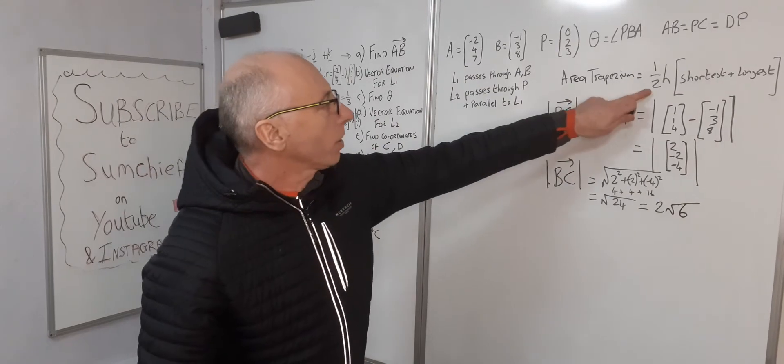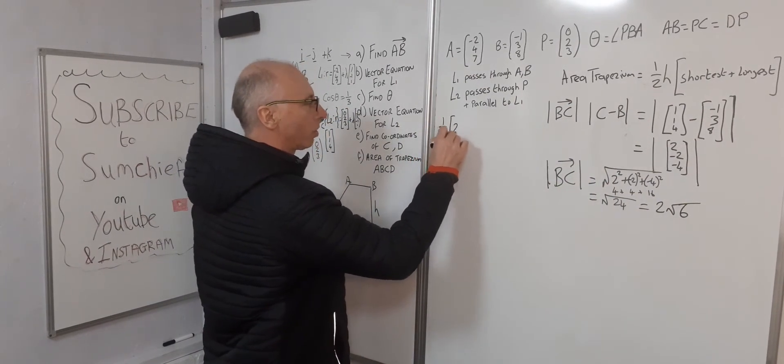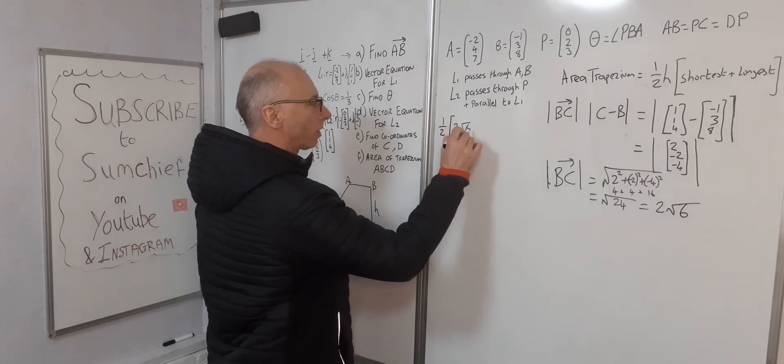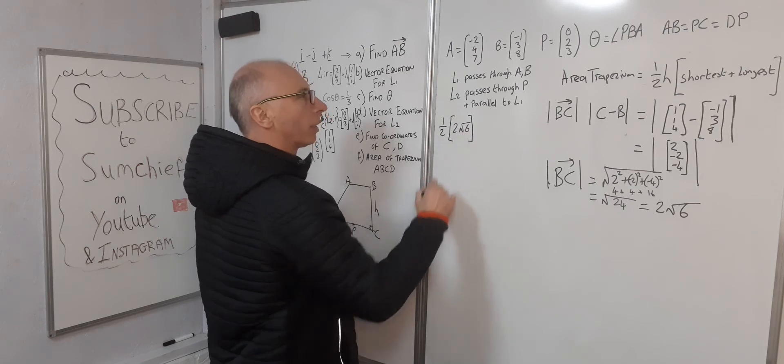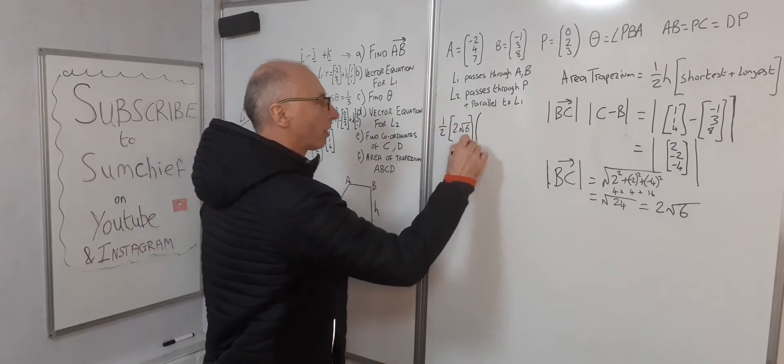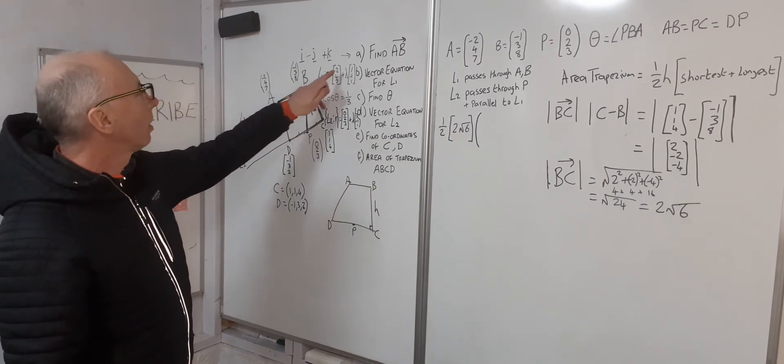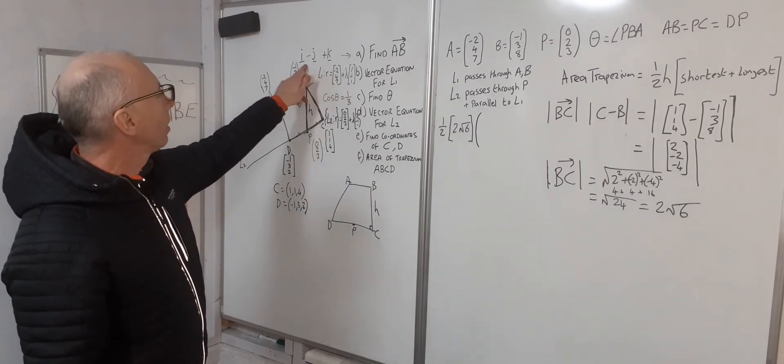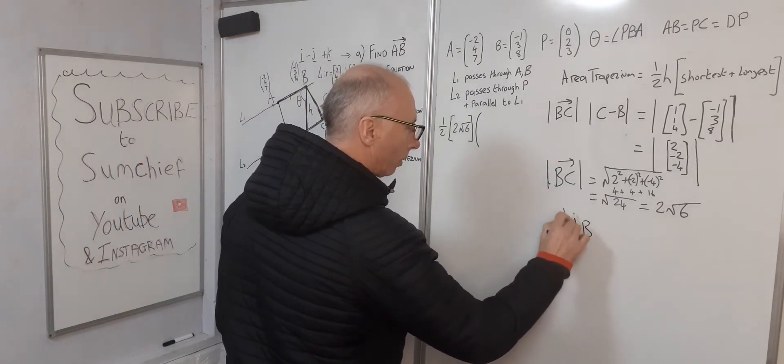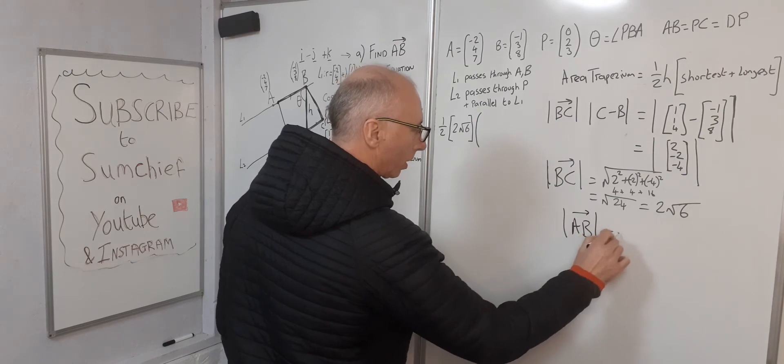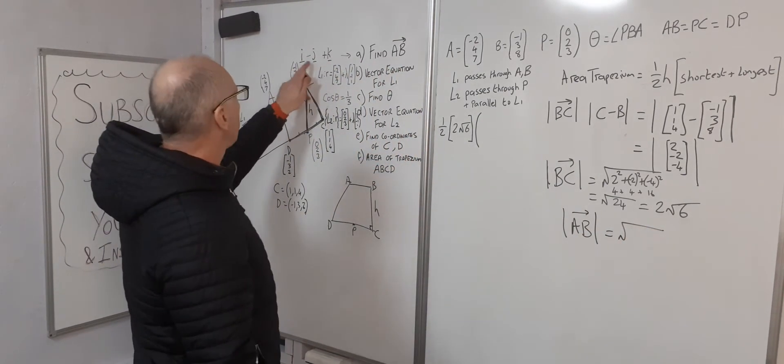Let's continue this formula over here. We've got ½ times 2√6. That's where we've got so far. Now the shortest and the longest—let's start with the shortest, AB. We know AB is this one here. Therefore, the absolute value of AB, or the modulus, is √(1² + 1² + 1²), they're all ones.